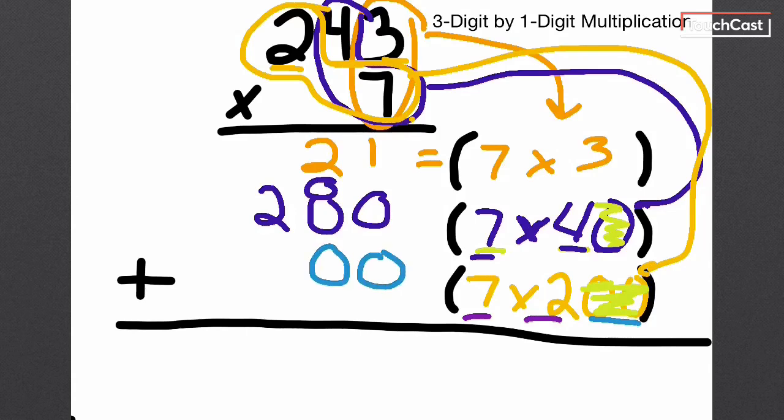drop them back off in place values, tens and ones. I took these two zeros, dropped them back off. Now I put my seven times my two, which I know was 14.